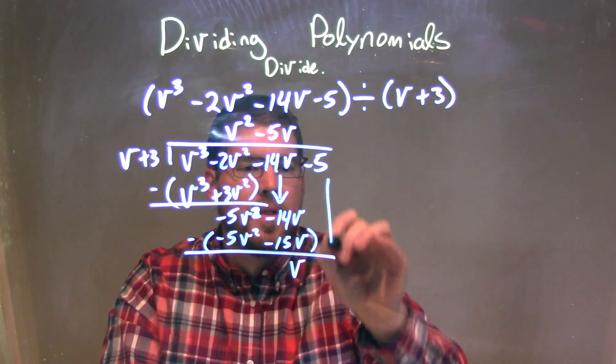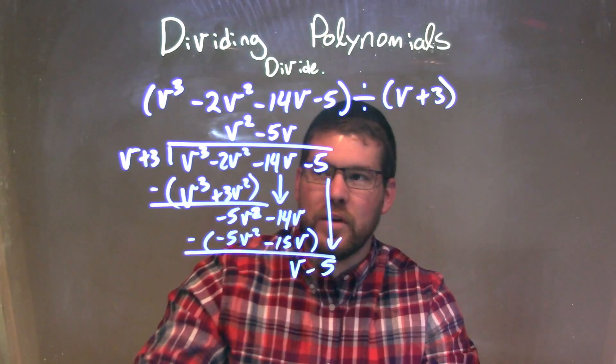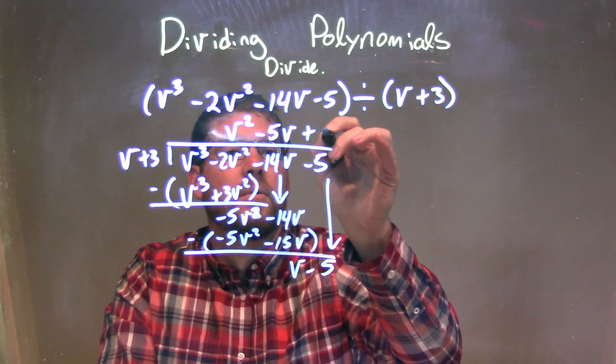Okay, we bring down the -5. So let's ask the question again, what times v is v? And that's just 1, pretty simple. Good old 1.